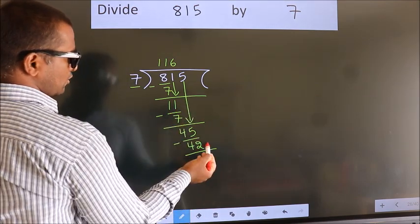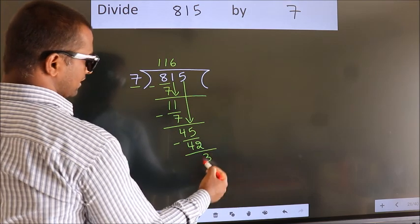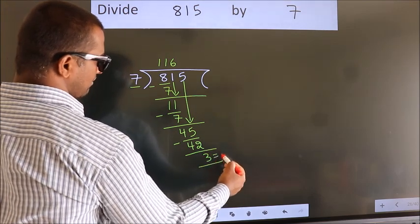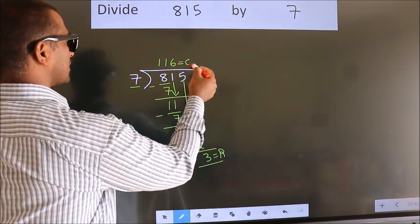No more numbers to bring it down. So we stop here. This is our remainder. This is our quotient.